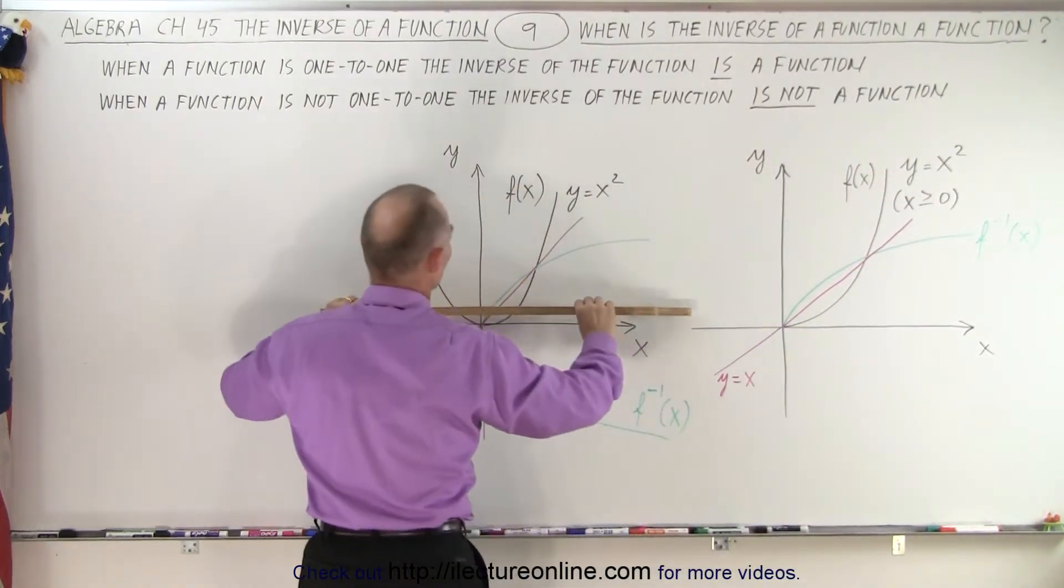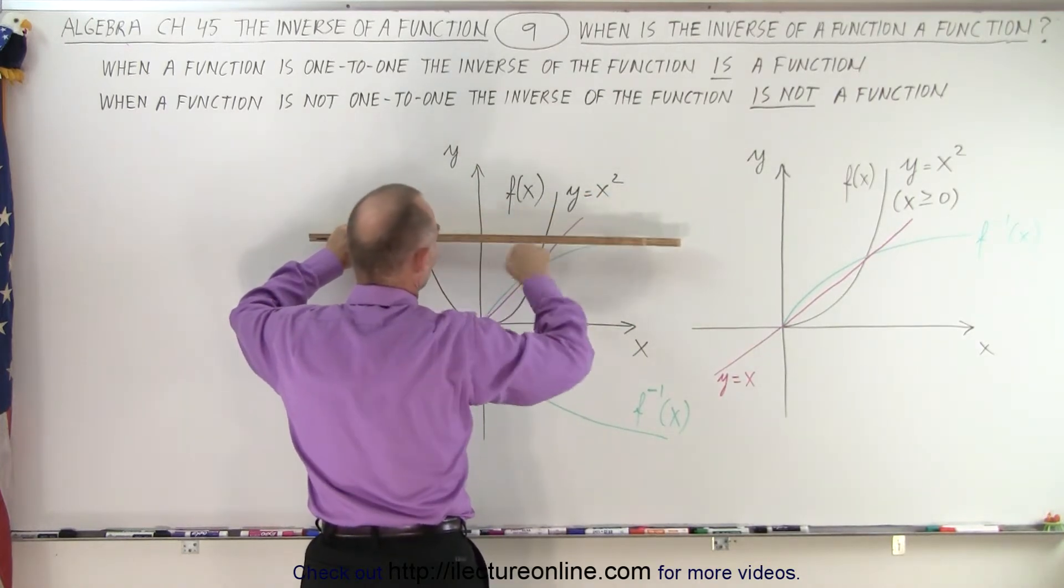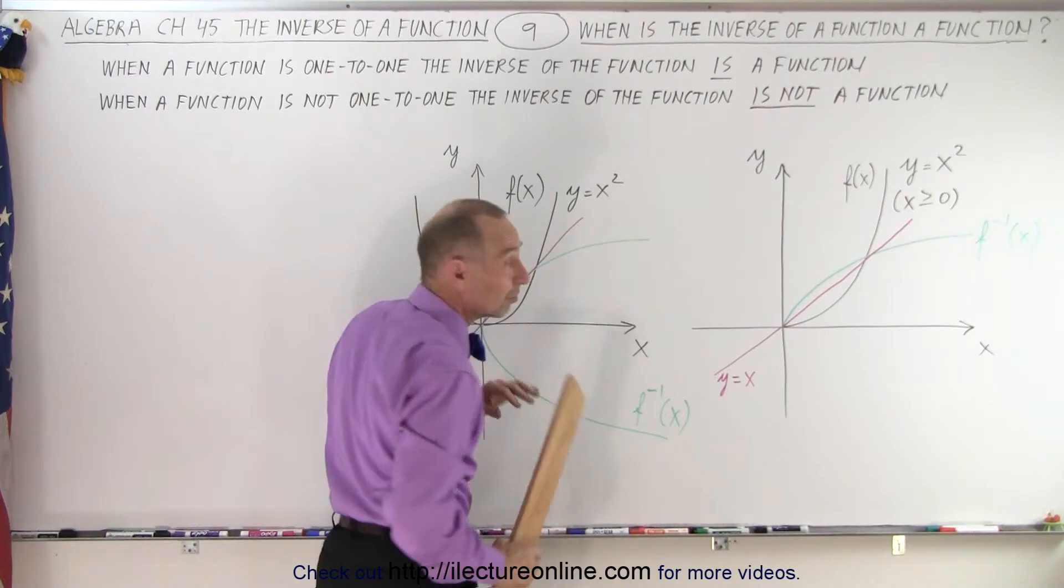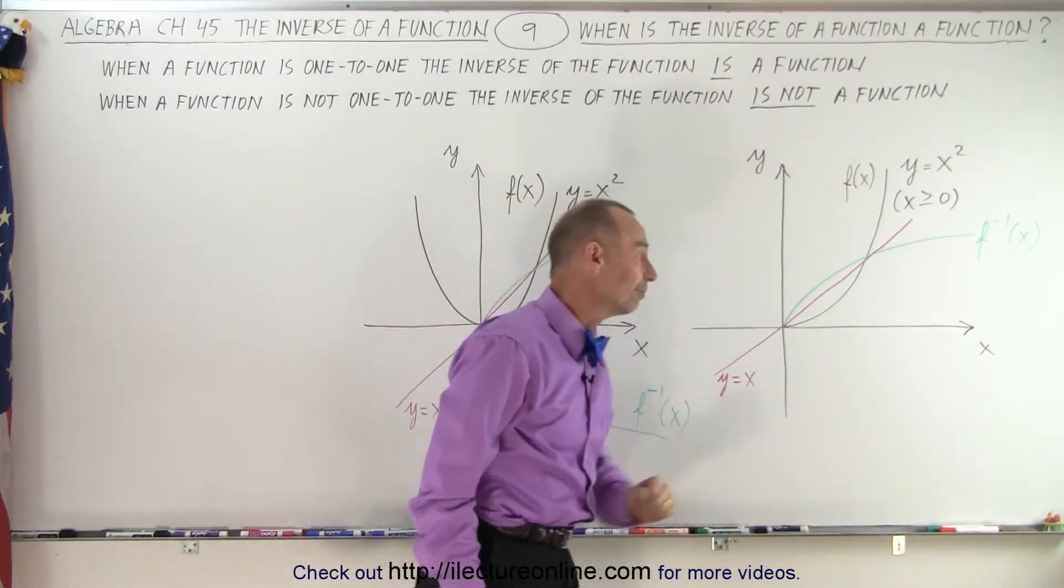Over here, when I do the horizontal line test, you can see that the curve y equals x squared crosses the horizontal line twice. So this is not one-to-one. This is a one-to-one function.